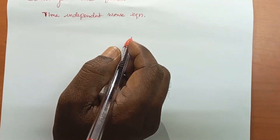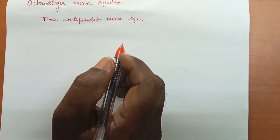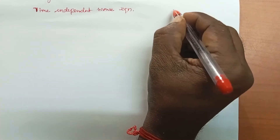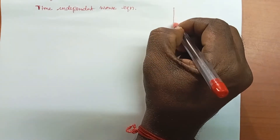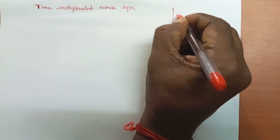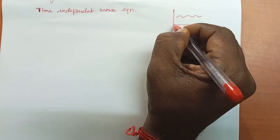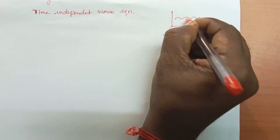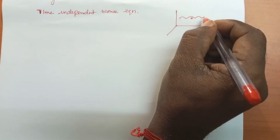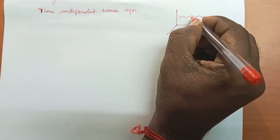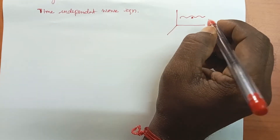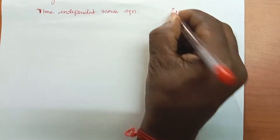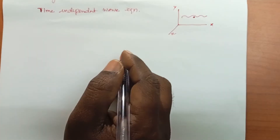Let us consider the wave associated with a moving particle. One moving particle is associated with a wave. This wave exists in all three directions: X, Y, and Z.